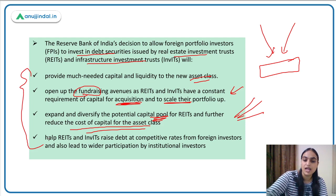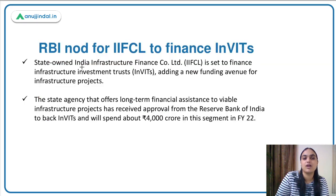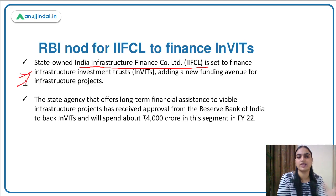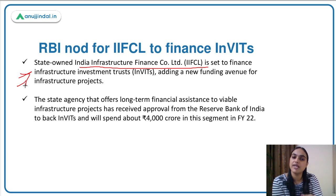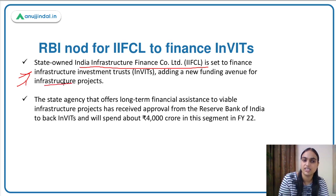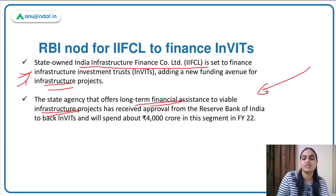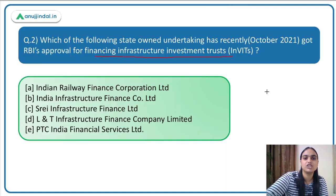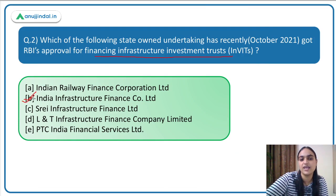One more development to discuss: India Infrastructure Finance Company Limited (IIFCL) has received RBI's approval to finance Infrastructure Investment Trusts. It can now set up an InvIT where money will be pooled and invested in different infrastructure projects. This state agency, which offers long-term financial assistance for infrastructure projects, can raise money by operating a trust and deploy it into infrastructure projects. The question was asking exactly this — which state-owned undertaking got this approval — and the answer is option B: India Infrastructure Finance Company Limited (IIFCL).